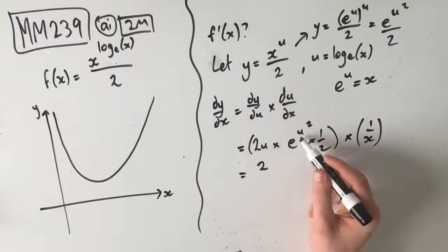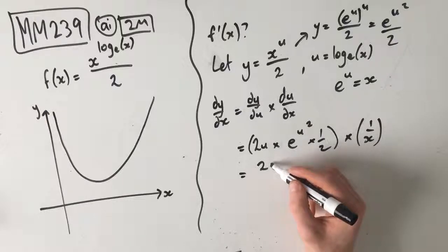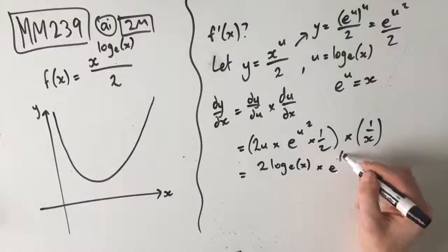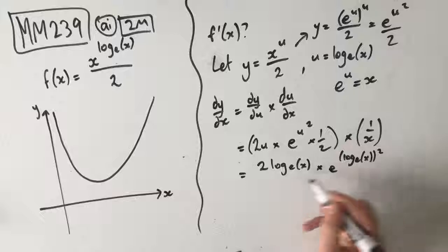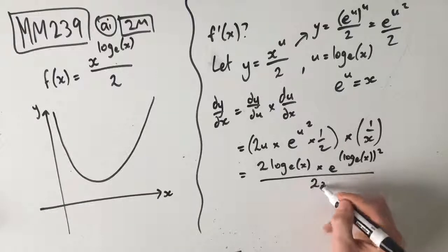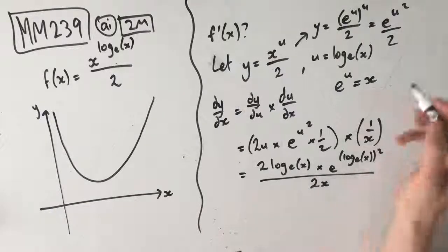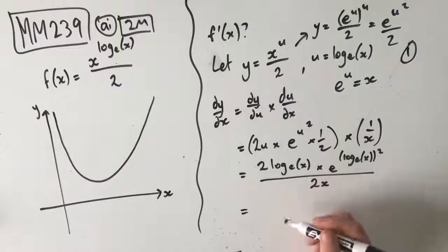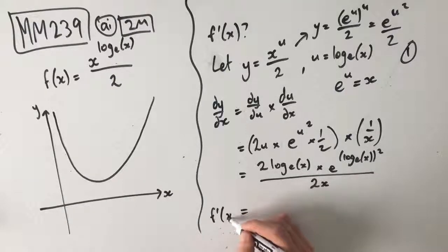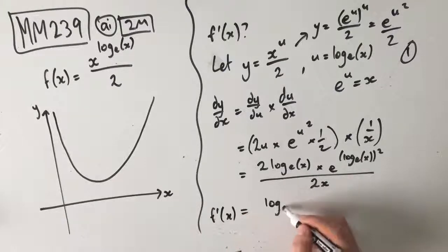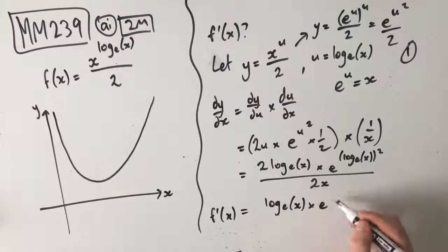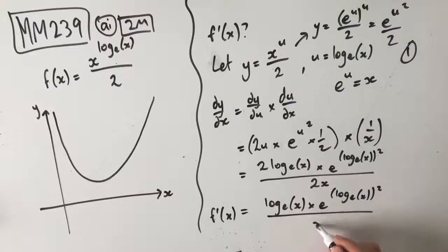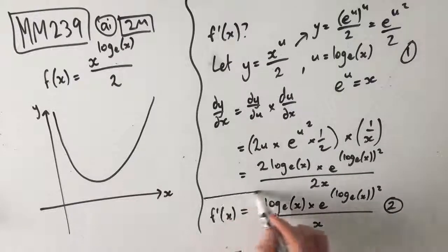We can replace u with log e of x. So we get 2 log e of x times e to the power of log e of x squared, all over 2x. This 2 can be cancelled out, and so we end up getting f dash of x equals log e of x times e to the power of log e of x squared, all over x. That's our second and final mark for this part.